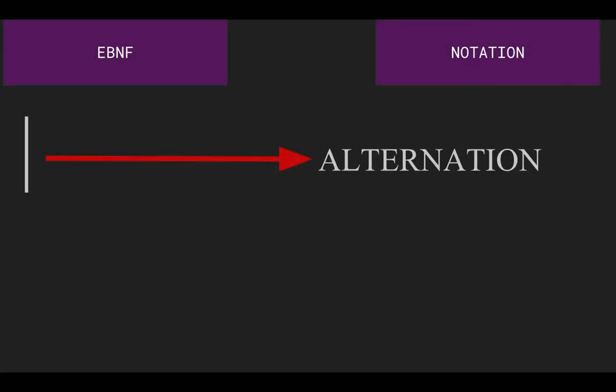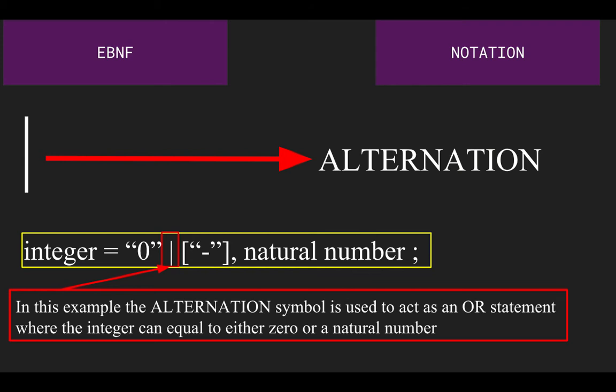Then, we have the vertical line symbol named alternation. And once again, similar to C-sharp coding, it is used as an OR statement to separate between two possible outcomes. In this example, we see that an integer can either equal the value of zero or a positive or negative natural number.